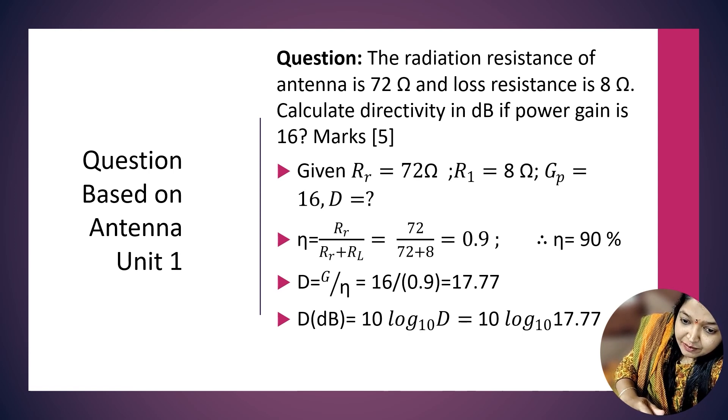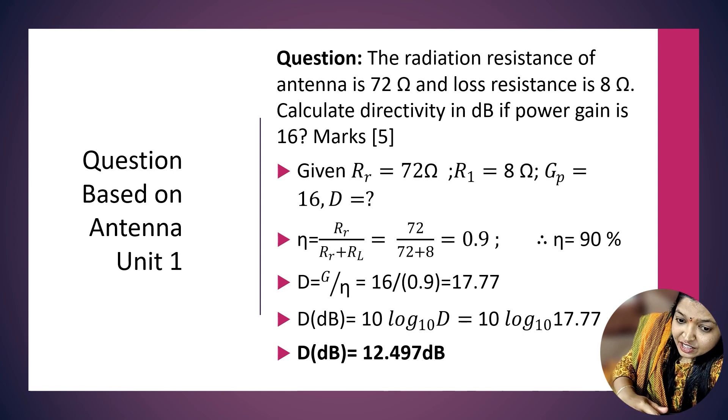Directivity D = GP/η = 17.77. But the question asks for directivity in dB. To convert to dB, we use the formula 10 log₁₀(D) = 10 log₁₀(17.77), and the answer is 12.497 dB. This numerical is for 5 marks.